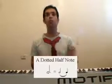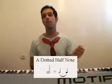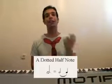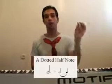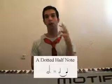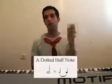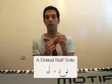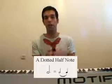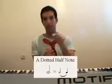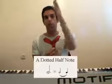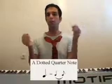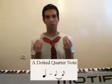Now let's take a dotted half note. A half note is worth 2 beats. Half of 2 is 1, so when we add a dot after a half note we get 3 beats — 2 plus 1. As you can see, we can write it also as a half note attached with a slur to a quarter note.